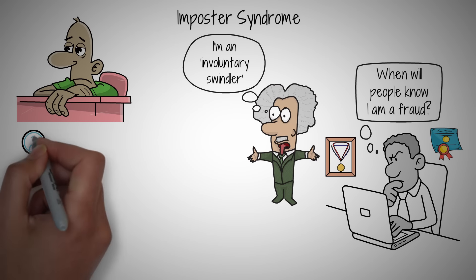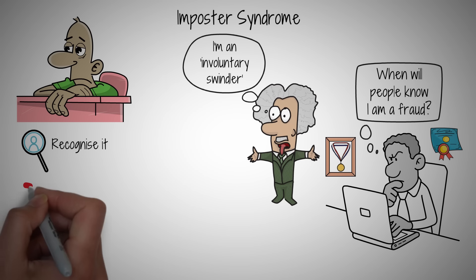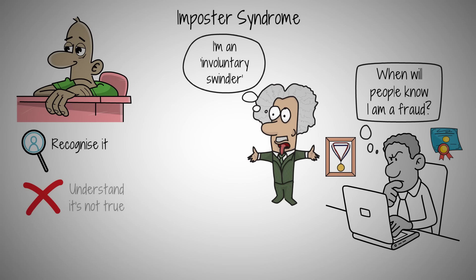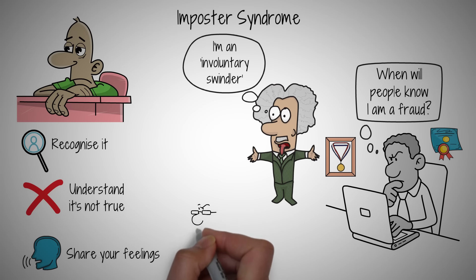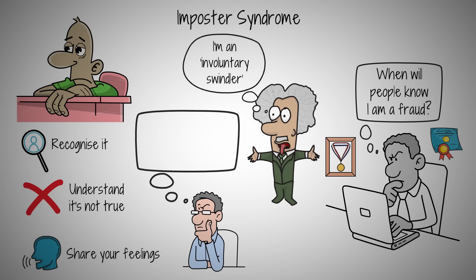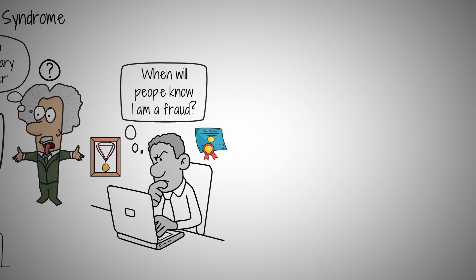So, how can we beat it? First, by recognizing it. Understand that it's a common experience, not a true measure of your ability. Next, share your feelings. You'll find many feel the same way. Remember, overcoming imposter syndrome starts with accepting that perfection doesn't equal worth. Next time doubt creeps in, remind yourself, I am capable. I am deserving. I am not an imposter. Your achievements are valid. Like Einstein, you might doubt yourself, but that doesn't diminish your contributions or your competence.